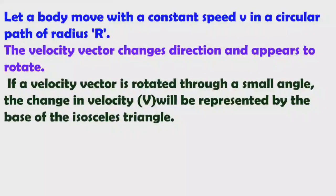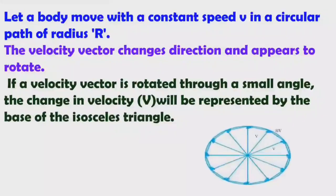If a velocity vector is rotated through a small angle, the change in velocity will be represented by the base of an isosceles triangle. The base of every such isosceles triangle is the change in velocity, that is delta v.